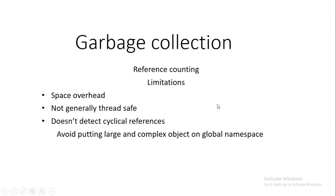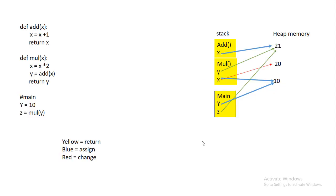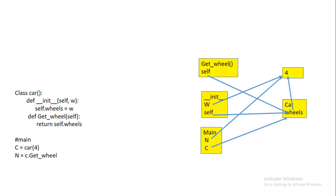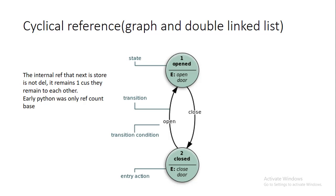An important point: avoid putting large and complex objects in the global namespace. Another way Python deletes objects from the heap is when a reference goes out of scope — the stack frame is popped off, the reference count drops to zero, and the object is deleted. But if a large object is in the global namespace, it will never go out of scope, making it memory-inefficient.